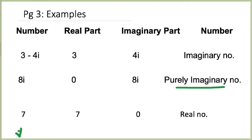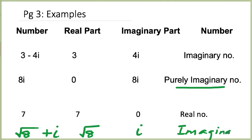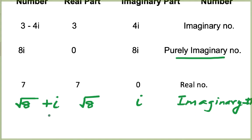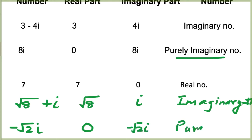Let's look at another example: square root of 8 plus i. The real part is square root of 8, and the imaginary part is i (with constant 1). This is an imaginary number. Now take square root of 2 minus i — the real part is 0, the imaginary part is negative square root of 2 times i, and this is a purely imaginary number.